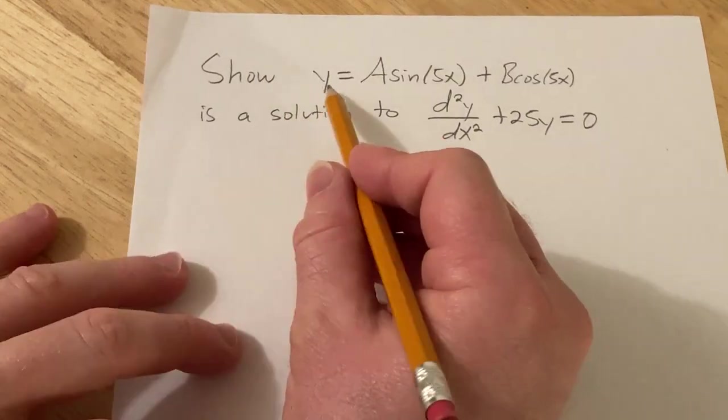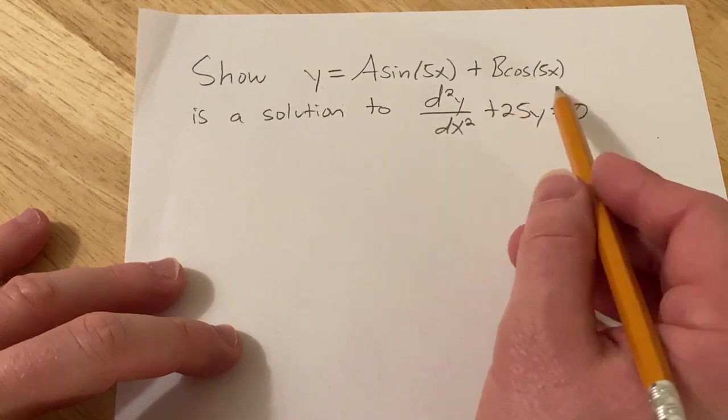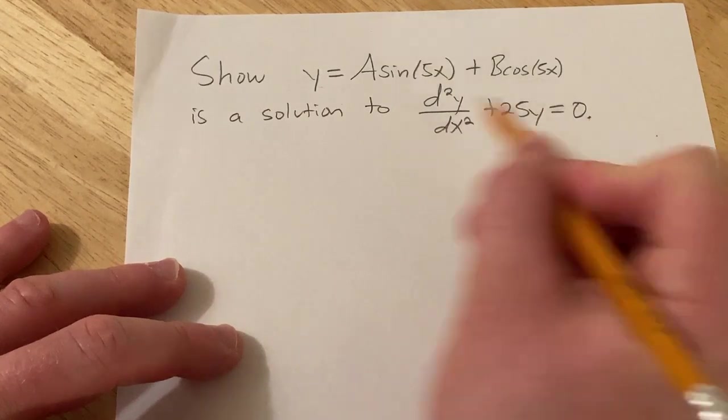Hi, in this problem we have to show that this function y equals A sine 5x plus B cosine 5x is a solution to this differential equation. Let's go ahead and work through it.